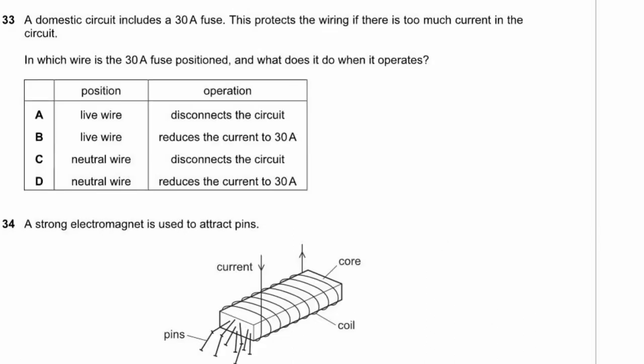Question 33. A domestic circuit includes a 30 amp fuse in the live wire. When too much current flows, the fuse melts and disconnects the circuit. It's placed in the live wire so the dangerous live section is cut off as early as possible. Answer A.